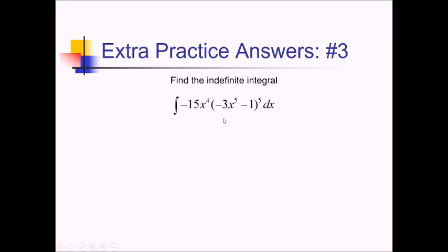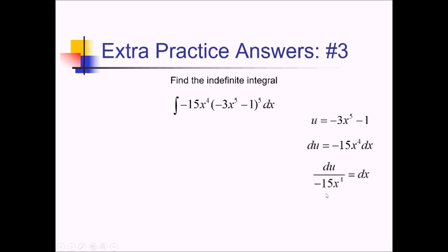Trying to take this anti-derivative, I noticed that expanding this parentheses and distributing would be a huge mess. Another technique we could use — since I noticed an inner function with an x to the fifth and something with a derivative of x to the fifth, with x to the fourth out here — is to try substitution. Let's let u equal the inner stuff: negative 3x to the fifth minus 1. Then du equals negative 15x to the fourth dx, so dx equals du over negative 15x to the fourth. Substituting back in, we have negative 15x to the fourth times u to the fifth times du over negative 15x to the fourth. The negative 15x to the fourths cancel completely.